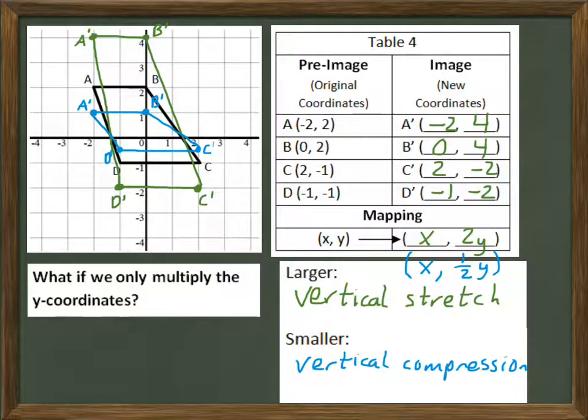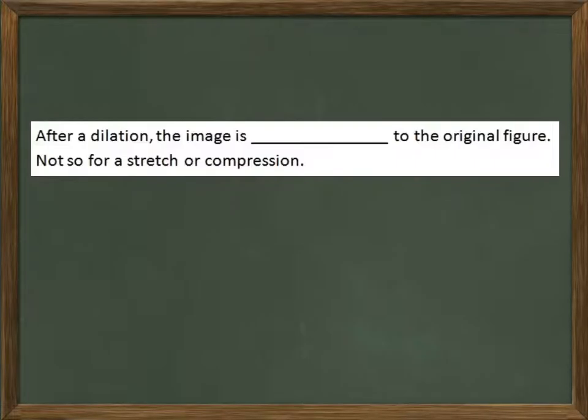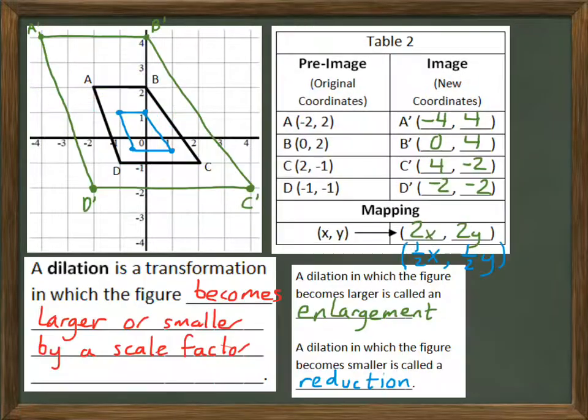That's the way you can dilate or stretch or compress individual figures. I want to make one more observation before we're done. So after a dilation, looking back at what we had before. After a dilation, that figure became either twice the size or half the size. Or it could be some other multiple if we chose a different number.